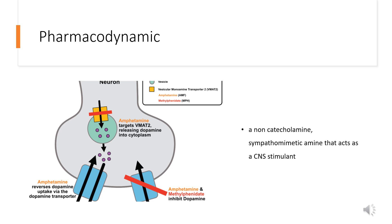Pharmacodynamics: Dextroamphetamine is a non-catecholamine sympathomimetic amine that acts as a CNS stimulant. Dextroamphetamine raises systolic and diastolic blood pressure, acts as a weak bronchodilator, and also acts as a respiratory stimulant.